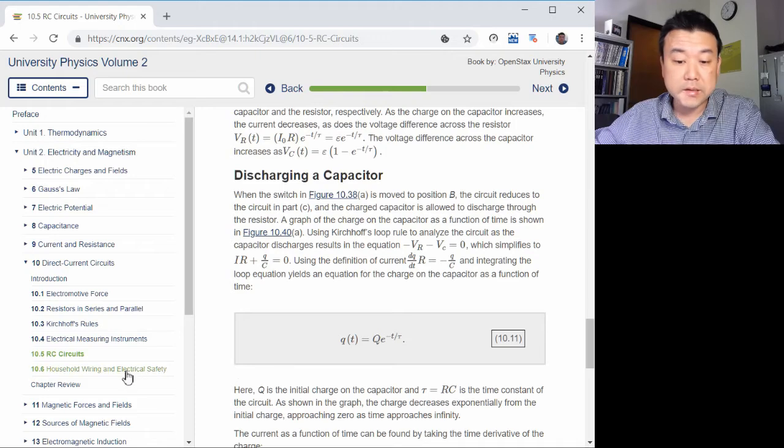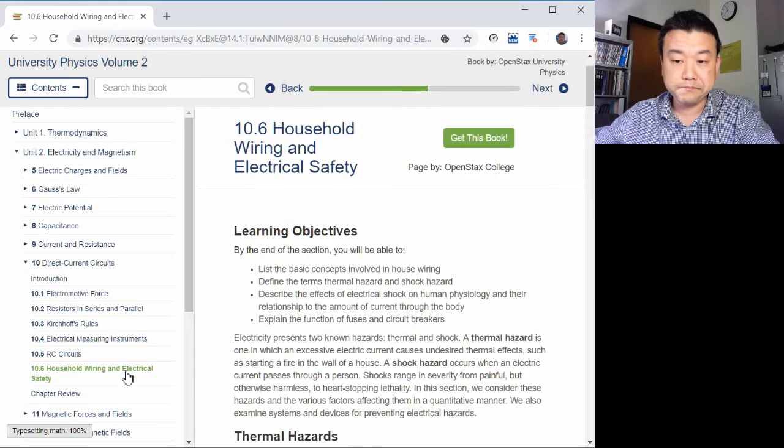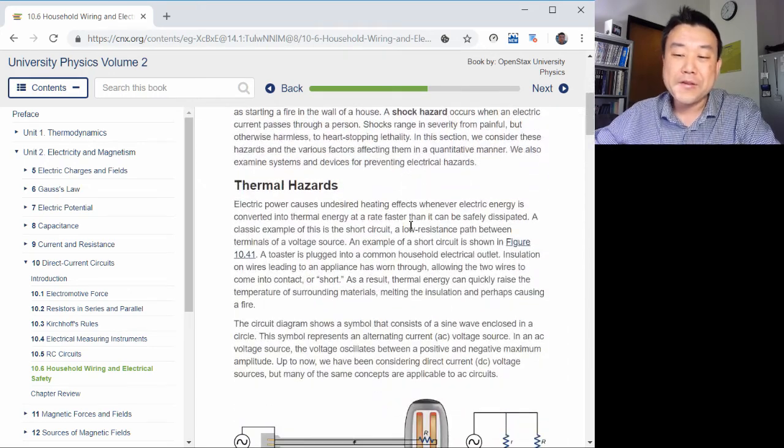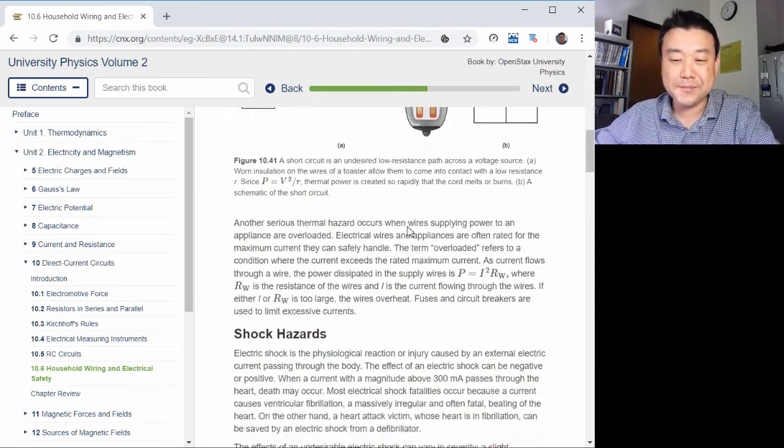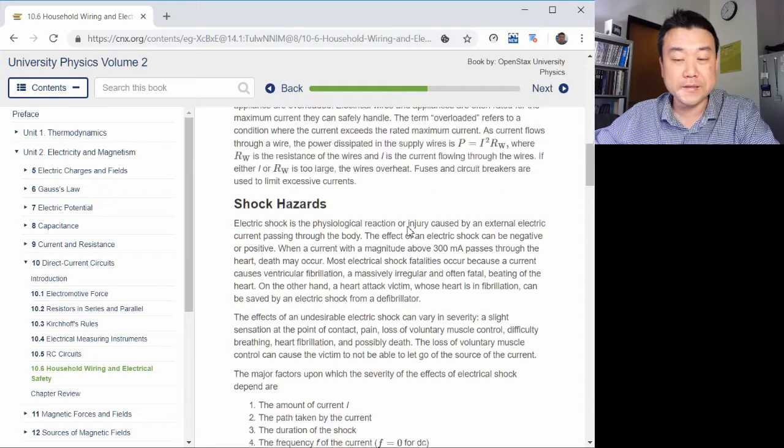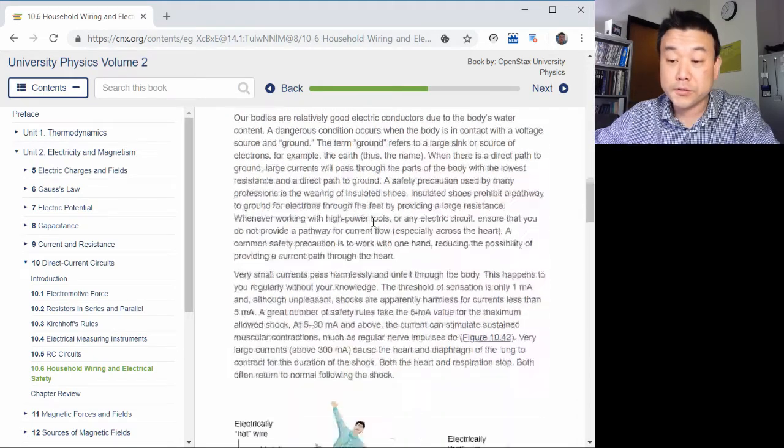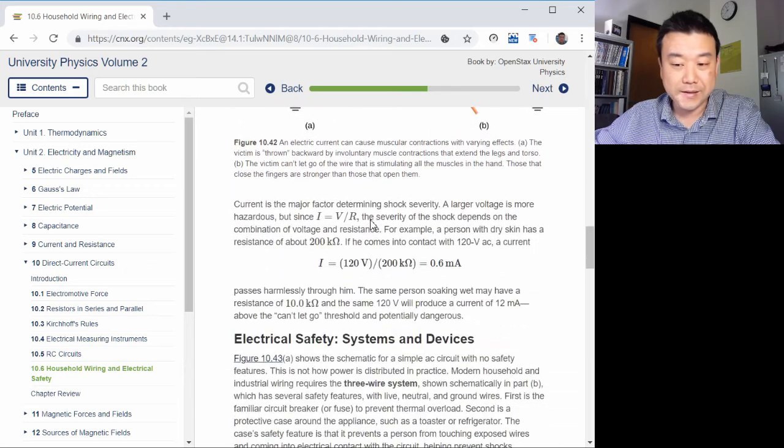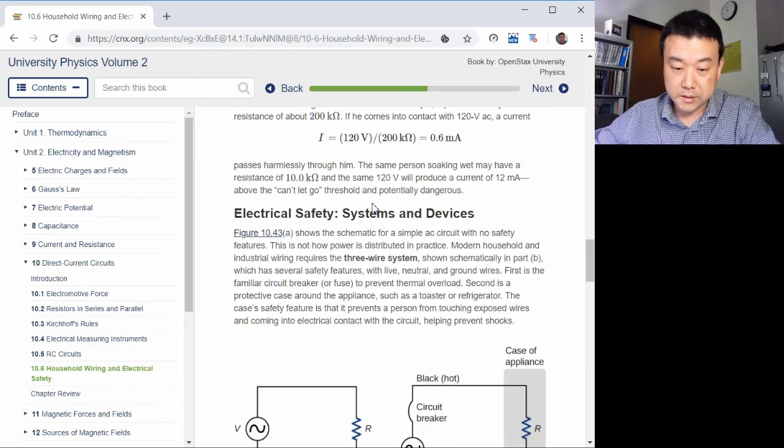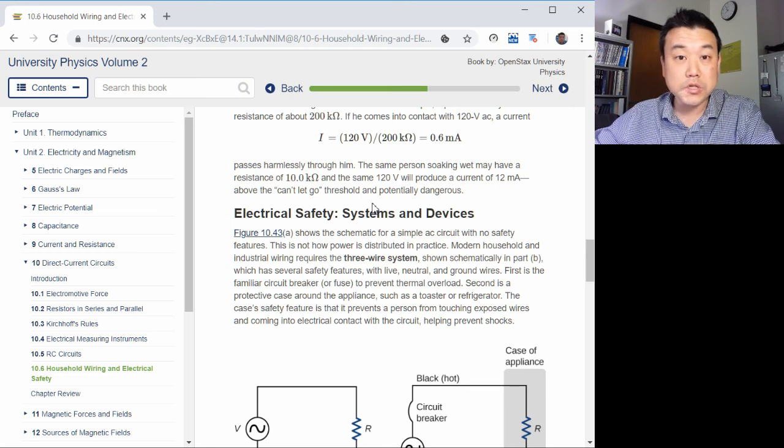Finally, chapter 10.6 deals with some basic common sense things that's good to know. You may be tested on some of these in multiple choice sections on your test, but beyond that, this is just something good for you to know, not exactly circuit analysis. So that's it for chapter 10. Message me if there are any questions, and until next time, bye.